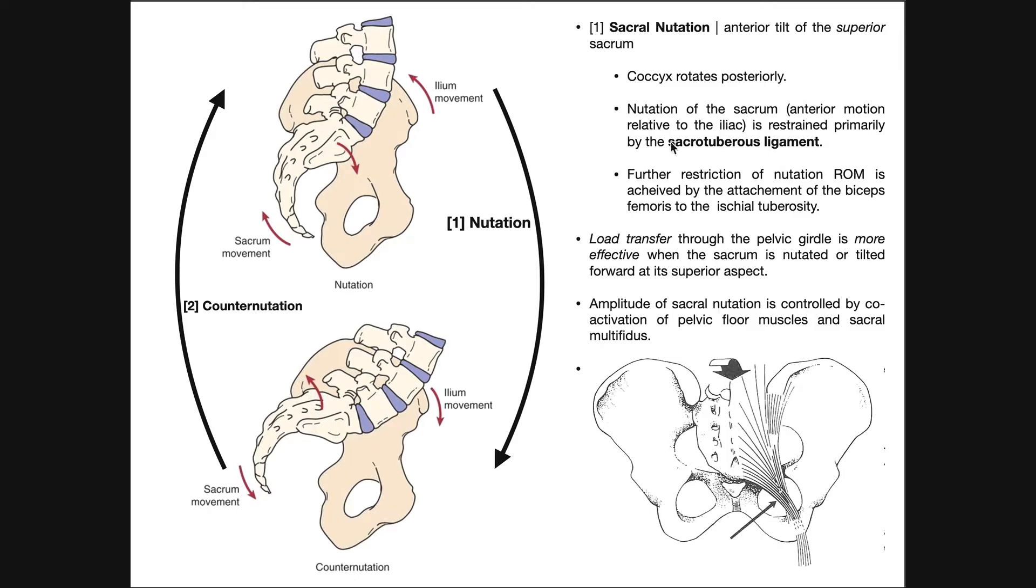But again, the sacrotuberous ligament is the major structure that restricts sacral nutation. So we don't get anywhere near this degree of nutation. This is not a normal movement. If we obliterated the sacrotuberous ligament, we might get this. But again, this movement is restricted via the sacrotuberous ligament.